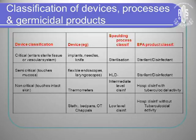Semi-critical instruments are those that touch the mucosa, like laryngoscopes — those also need high-level disinfection. Non-critical instruments are thermometers, stethoscopes, and bedpans. Those can be cleaned by a low-level disinfectant.